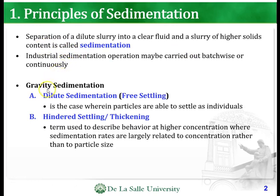The first type is dilute sedimentation, wherein you observe free settling. This is the case where particles are able to settle as individuals. The second type is hindered settling or thickening, which describes behavior at higher concentration where sedimentation rates are largely related to concentration.